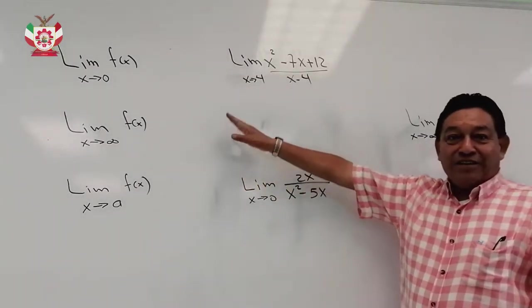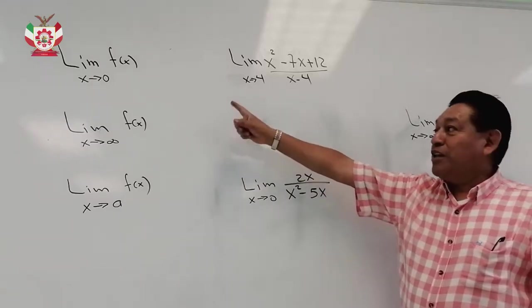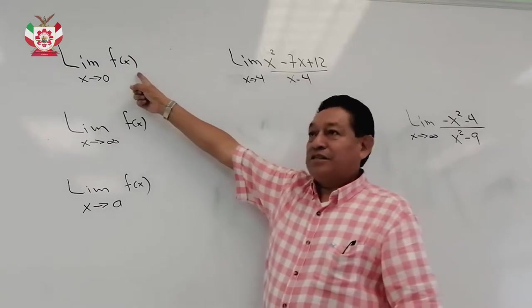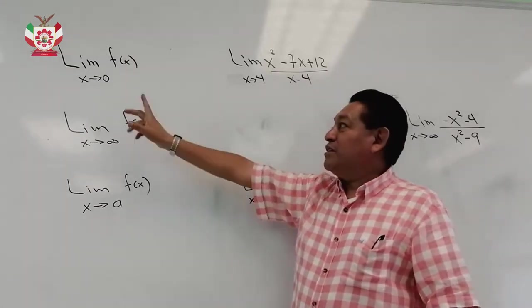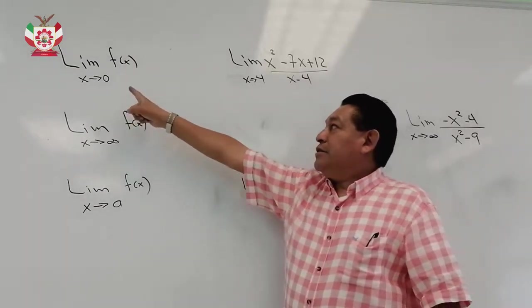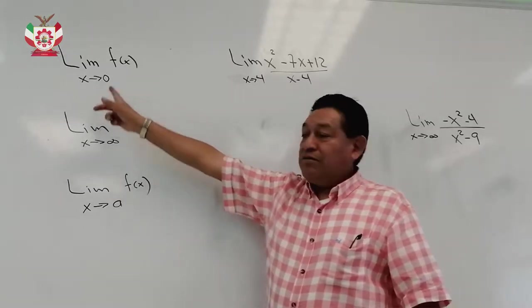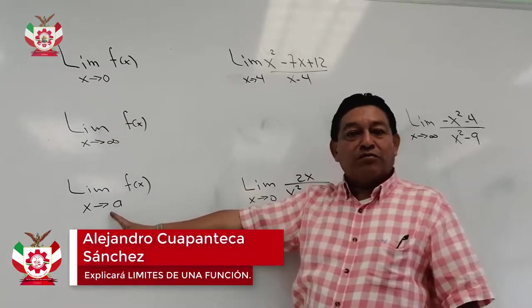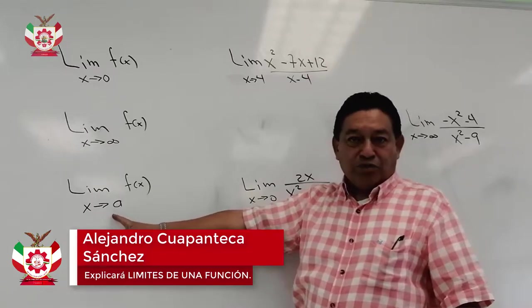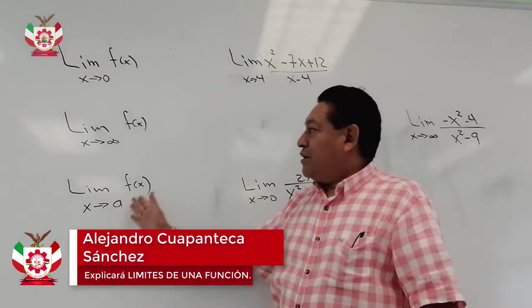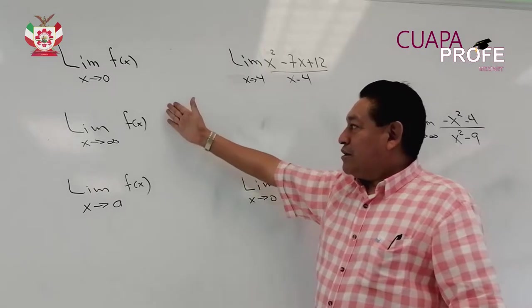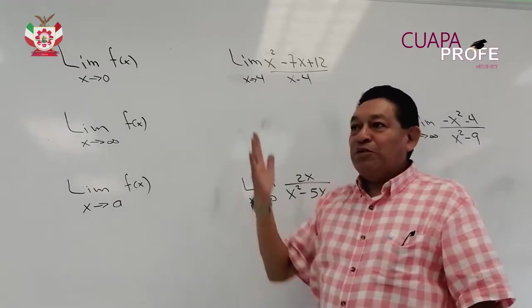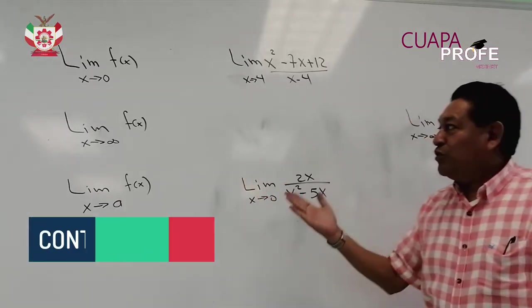Hoy quiero presentar algunas sugerencias para obtener límites. Regularmente los límites que buscamos en las funciones, la variable tiende a cero, tiende a infinito, o tiende a un cierto valor real, es decir, un número real. Entonces, lo que tenemos que cuidar es que para obtener un límite, lo primero que hacemos es sustituir.